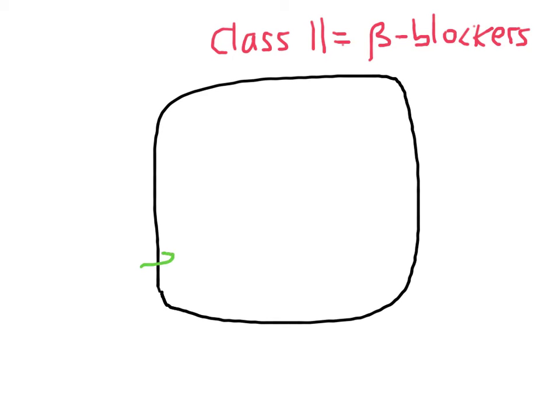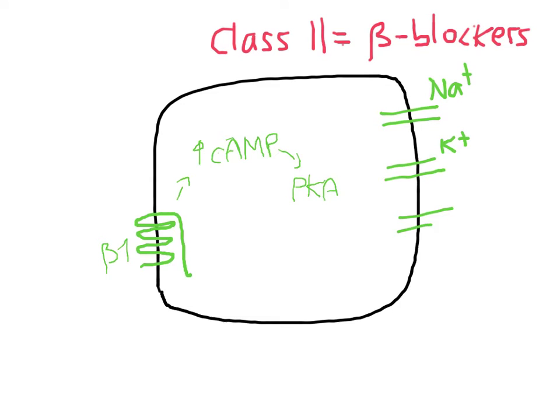These are G protein couples which activate adenyl cyclase, which increase cyclic AMP within the cell. Cyclic AMP in turn activates protein kinase A, which goes ahead and phosphorylates all the channels. The channels relevant to us now are the sodium channel, the potassium channel, and the calcium channel. All of these become phosphorylated by PKA. As a result of the phosphorylation, the sodium channel opens, the potassium channel is closed, and the calcium channel is opened.